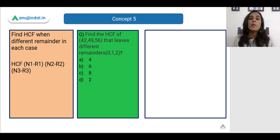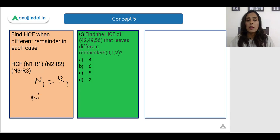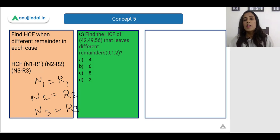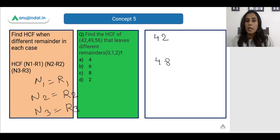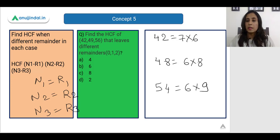Now let us see the fifth concept, which deals with finding the HCF when numbers leave different remainders. If a divisor leaves remainder r1 with n1, r2 with n2, and r3 with n3, we subtract each remainder from its number and then find the HCF. For example: 42 − 0 = 42, 49 − 1 = 48, 56 − 2 = 54. We have 42 = 7 × 6, 48 = 6 × 8, 54 = 6 × 9, so 6 is common everywhere and the HCF is 6.